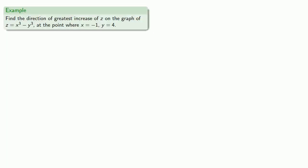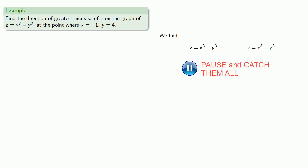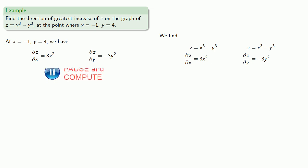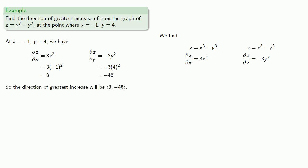So if we want to find the direction of greatest increase of z on the graph of z equals x cubed minus y cubed, at the point where x equals negative one and y equals four, we find those partial derivatives. At (negative one, four), these partial derivatives have specific values, and the direction of greatest increase will occur in the direction of those partial derivatives: (3, negative 48).